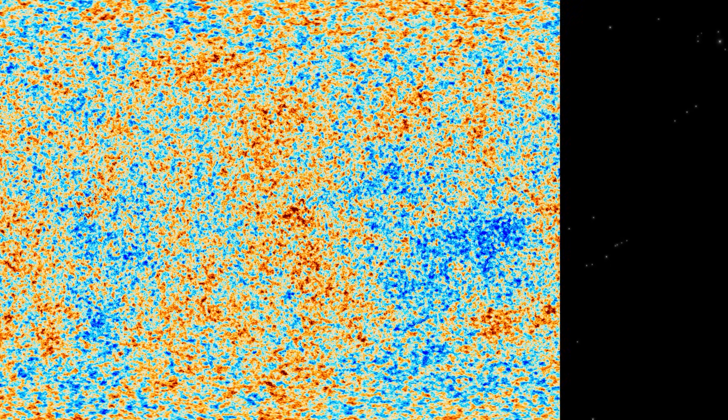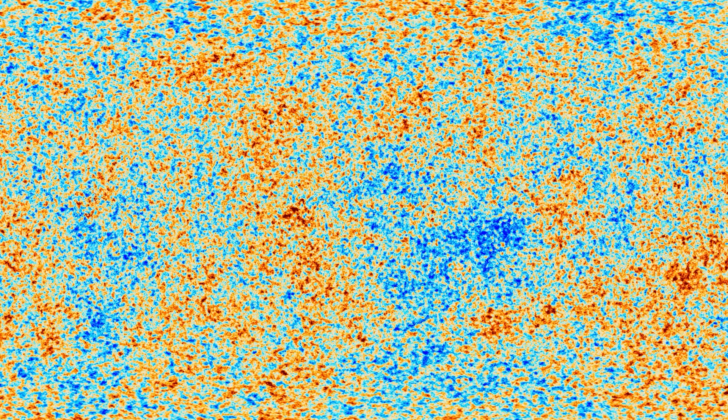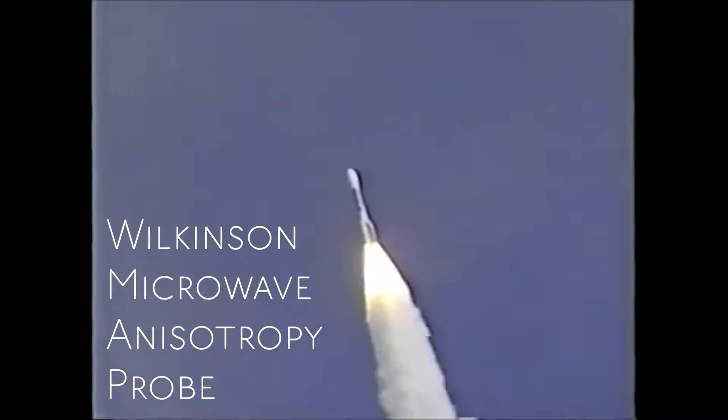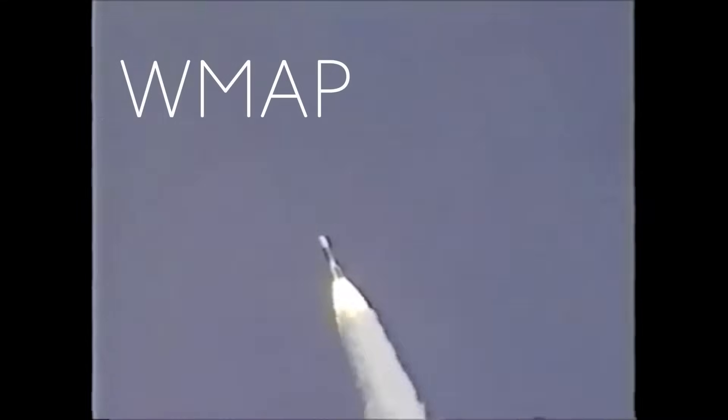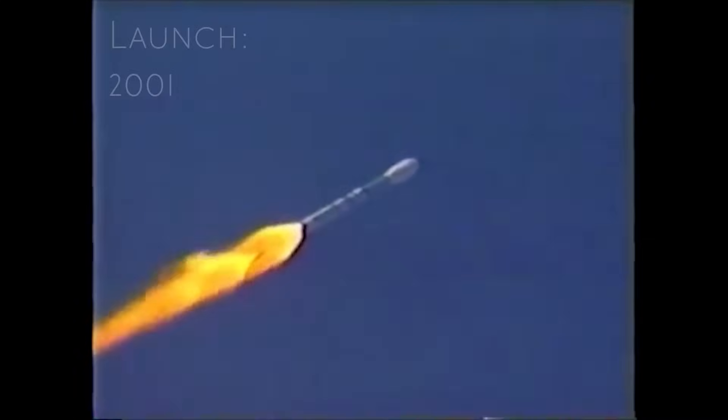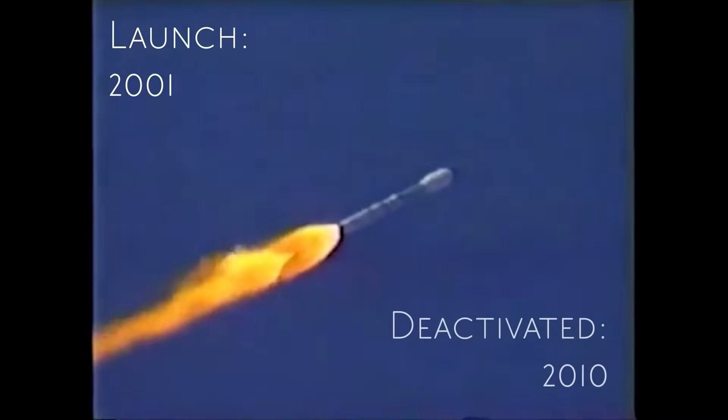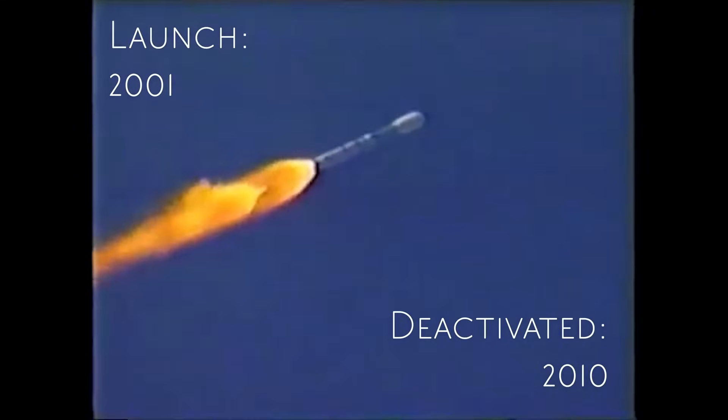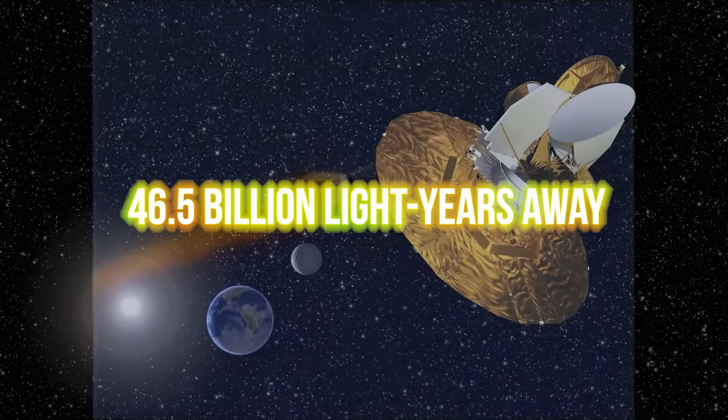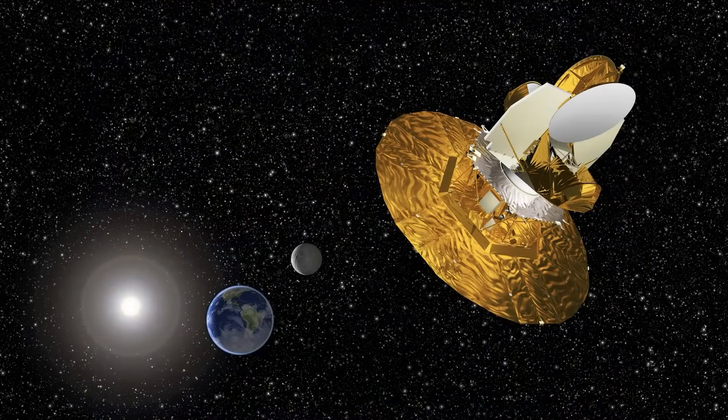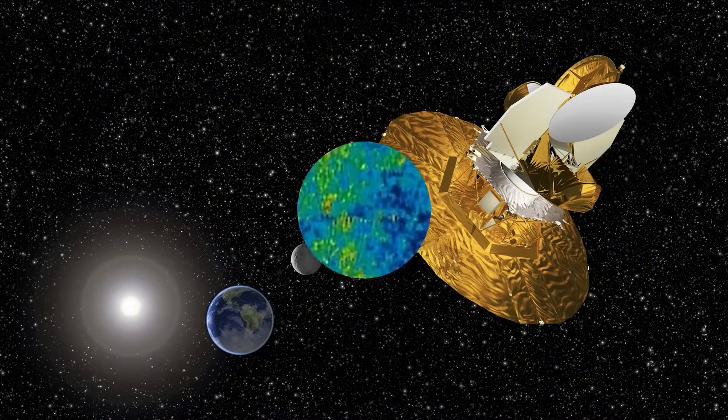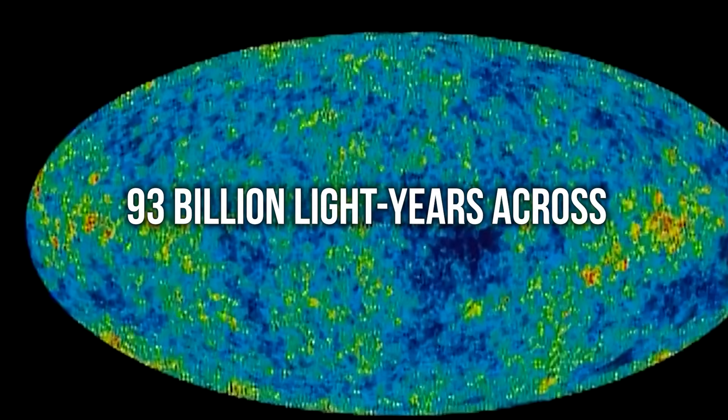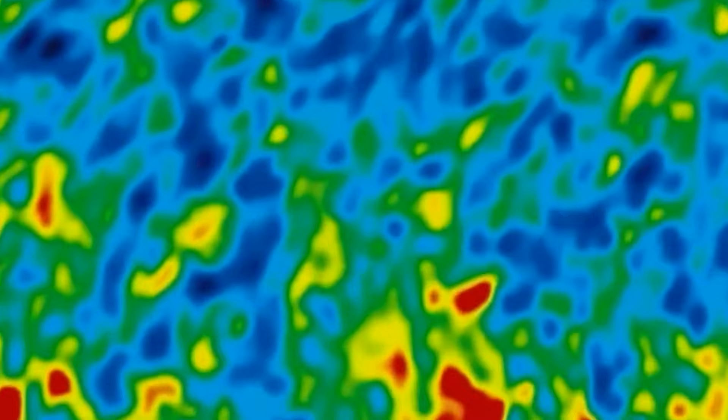When it comes to understanding the cosmic microwave background radiation, one of our most accurate sources of information is the Wilkinson Microwave Anisotropy Probe, or WMAP. It, along with other estimates, has revealed that the farthest observable photons we can detect originate from a staggering 46.5 billion light years away. This suggests that our observable universe extends to a minimum of 93 billion light years across, equally in both directions.